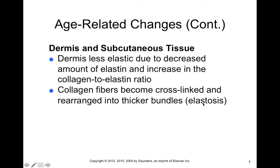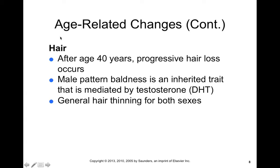In terms of hair changes, after age 40 there's progressive hair loss in both sexes. In males, we find male pattern baldness — true or frank baldness — which is associated with testosterone levels. Specifically, dihydrotestosterone (DHT) is the variety of testosterone associated with male pattern baldness. Generally, there's hair thinning for both sexes as we get older.